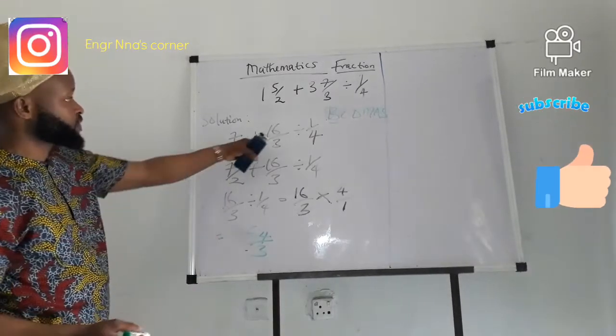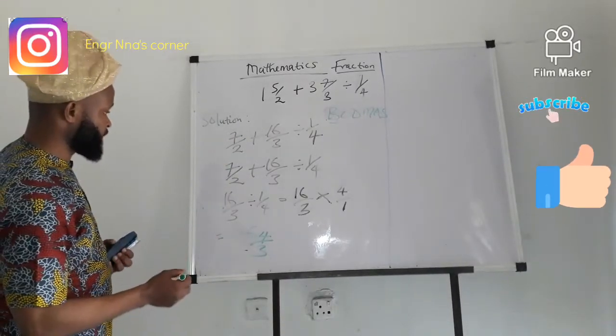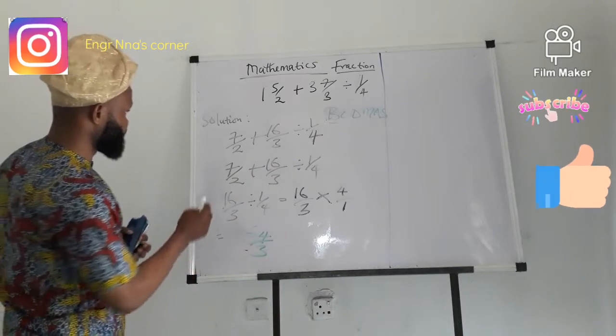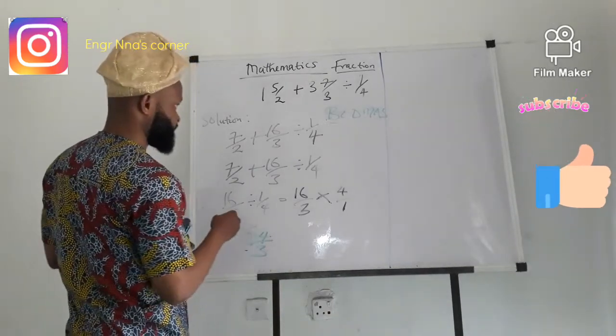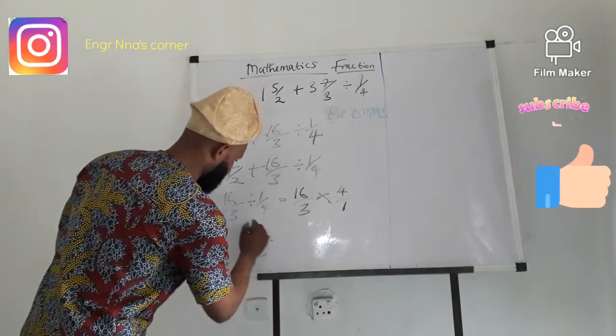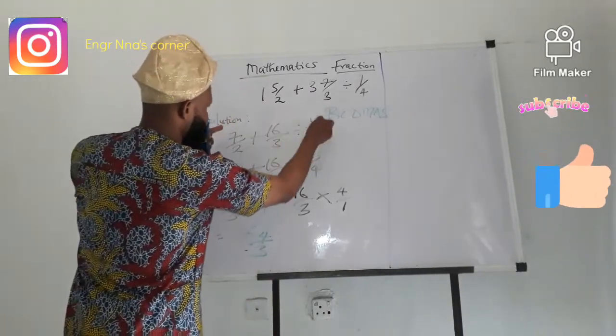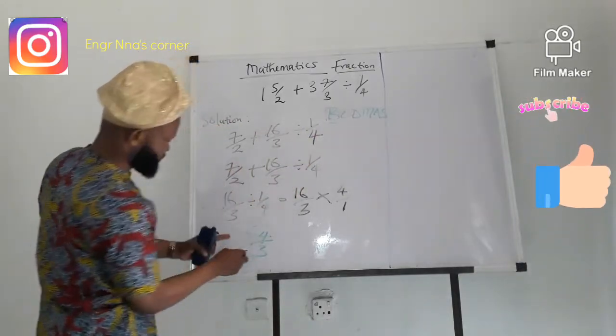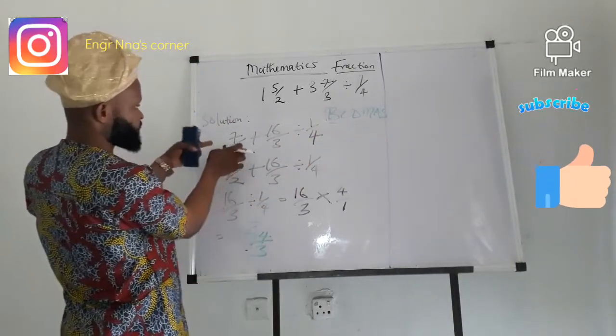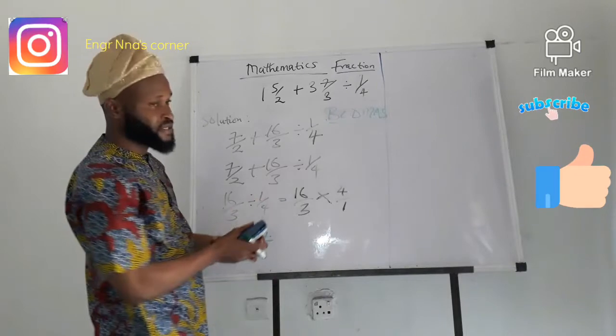We put it back into the program. That is what that gave us. This whole part here gave us 64 over 3. So we have to put it down here. What's the next action?